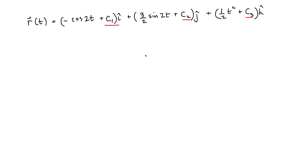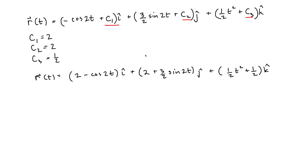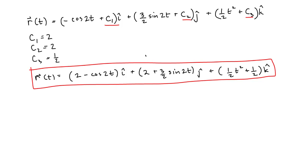Here's our function r of t. With C1 equal to 2, C2 equal to 2, and C3 equal to 1 half, our vector function is equal to 2 minus cosine of 2t for the x component, plus 2 plus 3 halves sine of 2t for the y component, plus 1 half t squared plus 1 half for the z component. We have now found our vector function given the initial conditions.